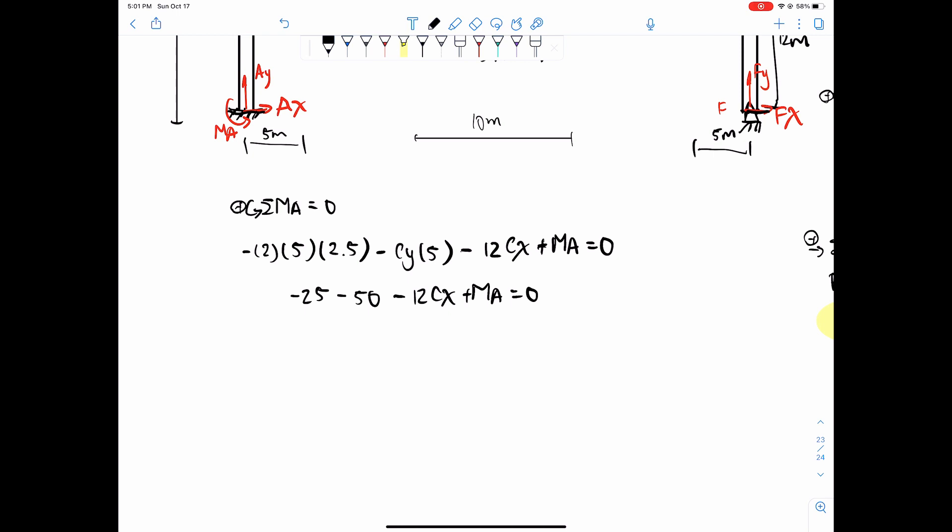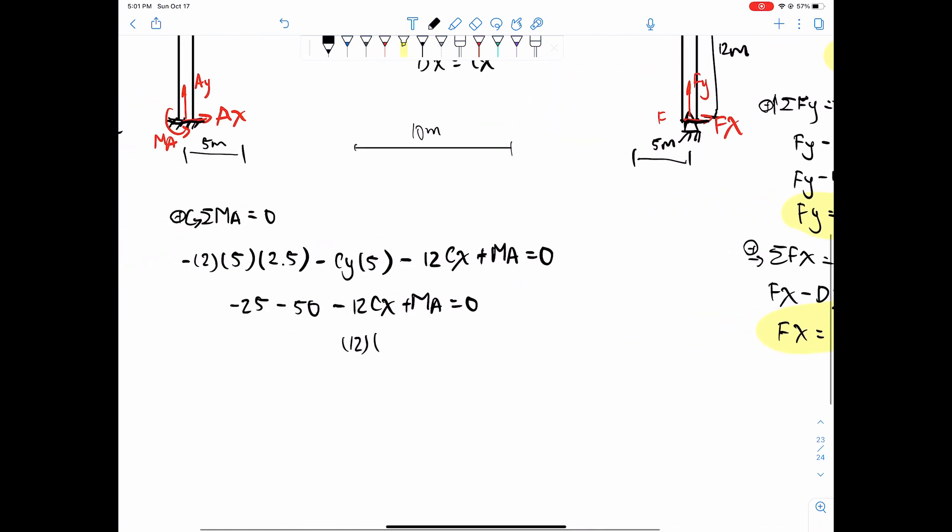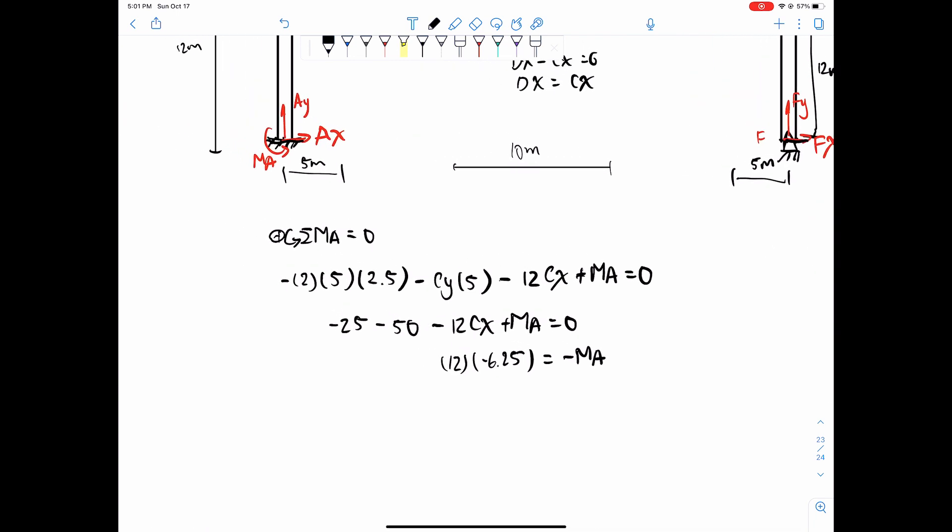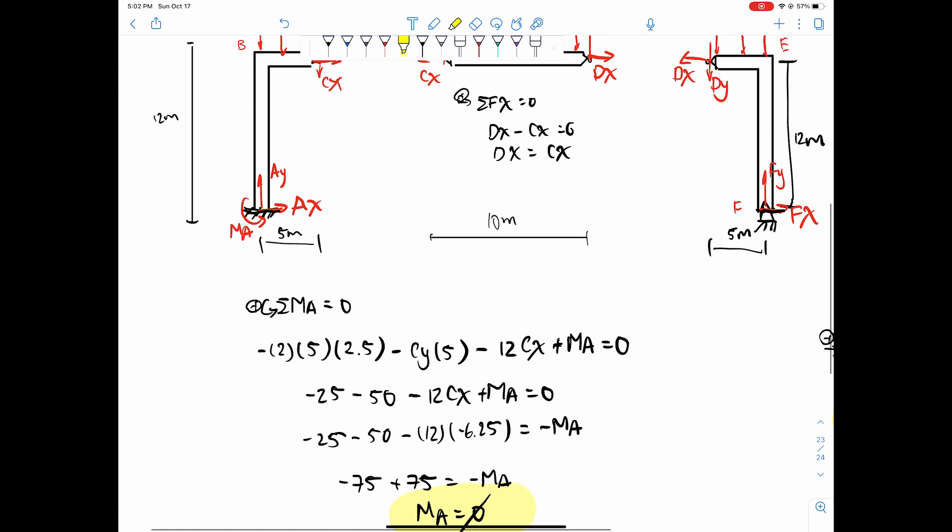We have 12 times cx, which is negative 6.25, equals negative ma. So 50 and negative 25, negative 12 times negative 6.25 equals negative ma. So ma would just conveniently cancel out to 0. Wow. Usually problems are kind of like that, complex equations, but in the end it just comes out to 0.